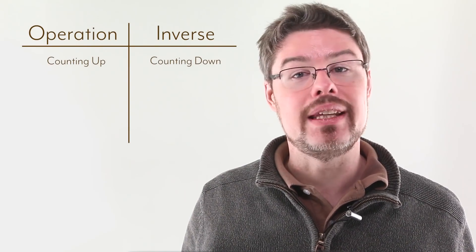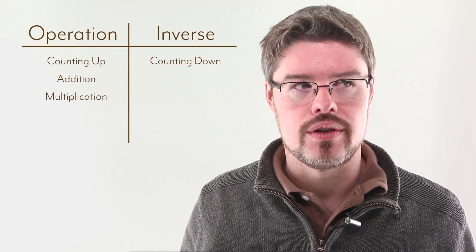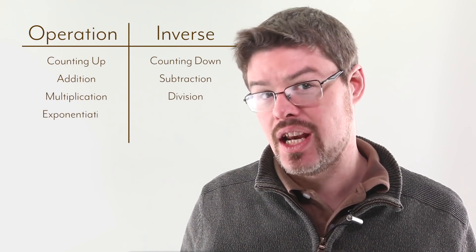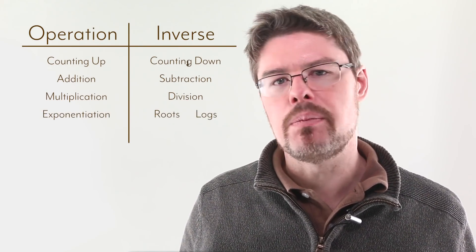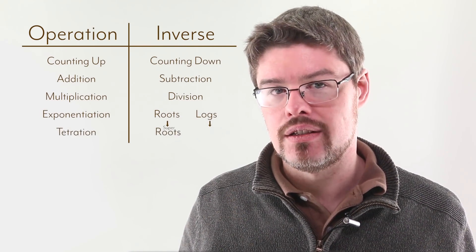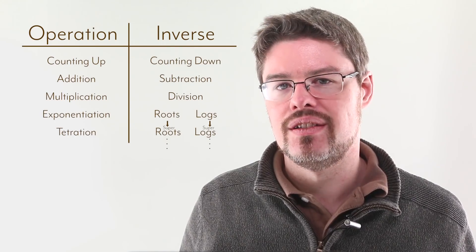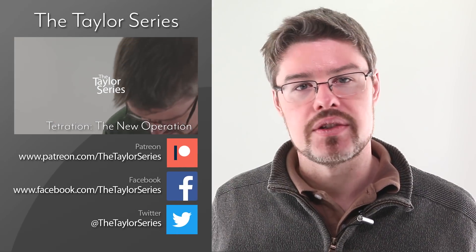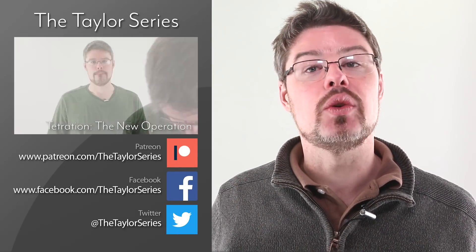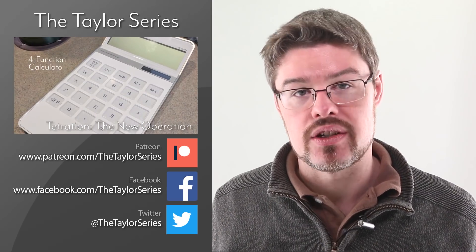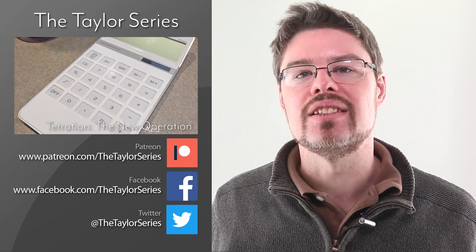In today's episode, we talked about the inverses of addition and multiplication, which are subtraction and division. We discovered that the inverses of exponentiation — roots and logarithms — formed a branching point in that sequence, and that those two branches continue on down the chain: two inverses for one operation. I don't know about you, but I still think that's a fascinating fact. Thanks to Aragami for hosting this episode of the Taylor series, and congratulations to you on successfully completing the next term in your own Taylor expansion. I'm Derek Taylor, and I'll see you next time.